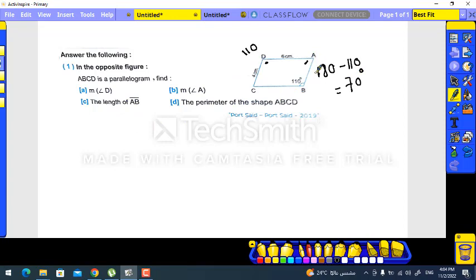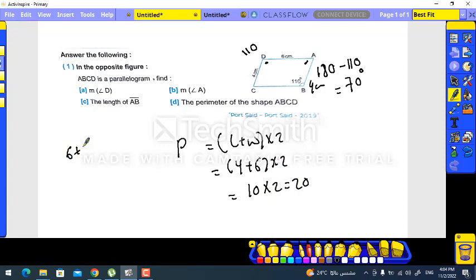Length of AB - yes, AB here is opposite to DC, so it will be 4 cm. The perimeter of the shape ABCD: perimeter equals length plus width times 2, so it will be 4 plus 6 times 2, so it will be 10 times 2 equals 20.